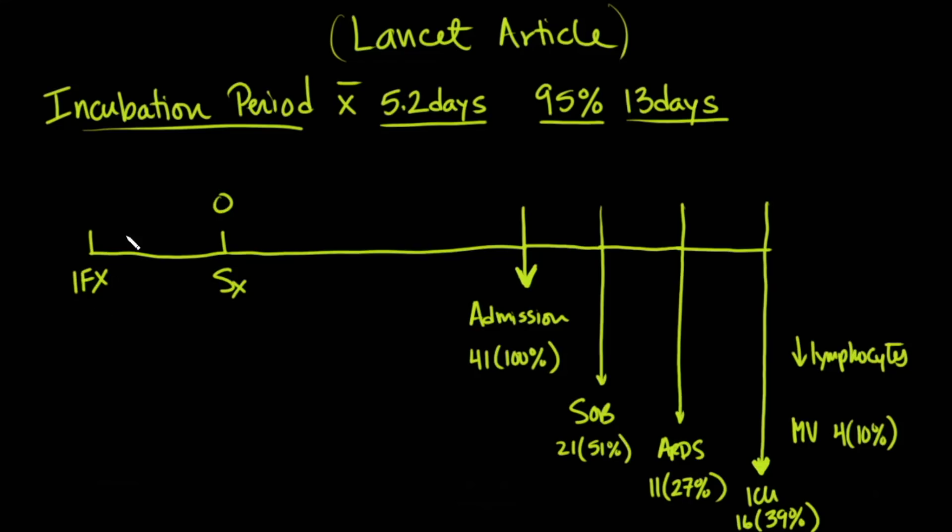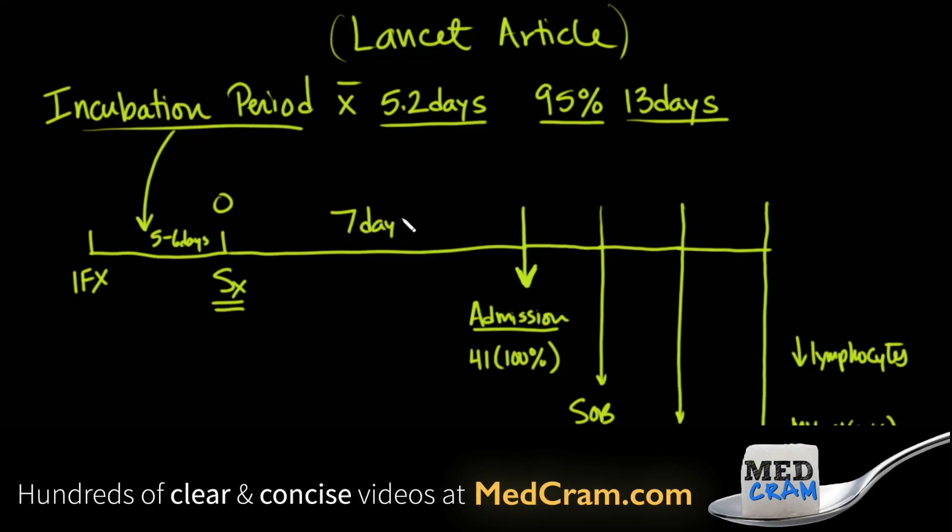So here we have the infection that starts, and that incubation period would go right in here, so on average it'd be about five or six days. And then the time from symptom onset to admission to the hospital, and that's a very key thing there, because most patients probably don't even go to the hospital and they may do just fine. But for those that do go to the hospital, it was noted to be about a seven-day period.